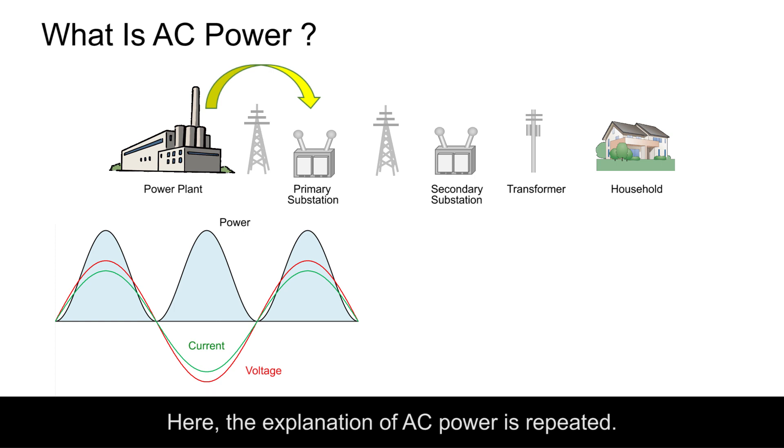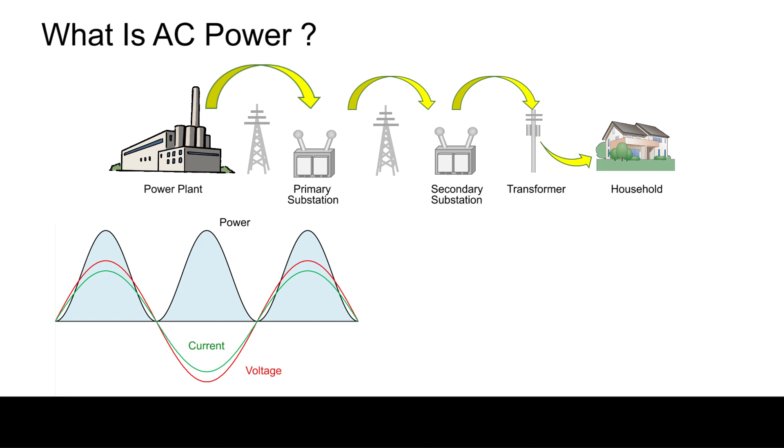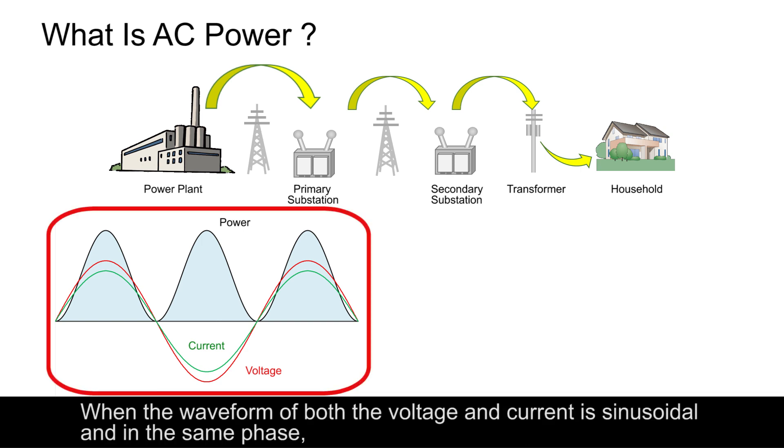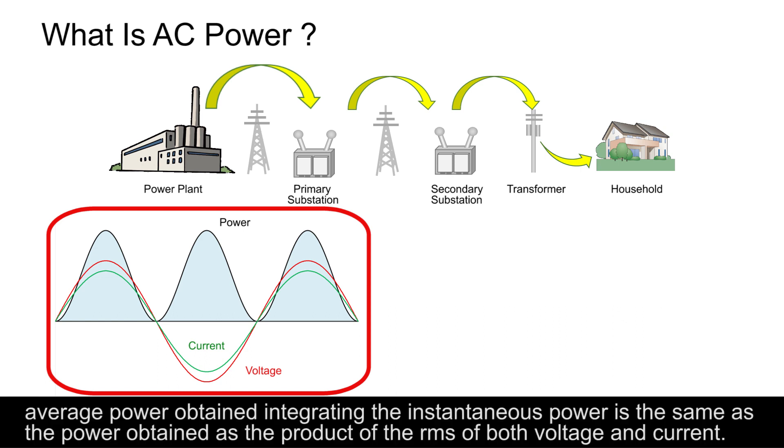Here, the explanation of AC power is repeated. In AC, both voltage and current change instantaneously with time. Instantaneous power is the product of the voltage and current. When the waveform of both the voltage and current is sinusoidal and in the same phase, average power obtained integrating the instantaneous power is the same as the power obtained as the product of the RMS of both voltage and current.